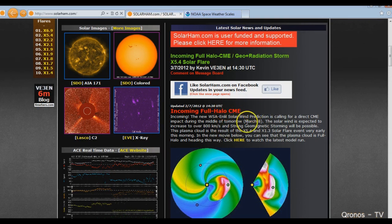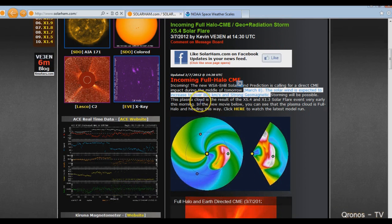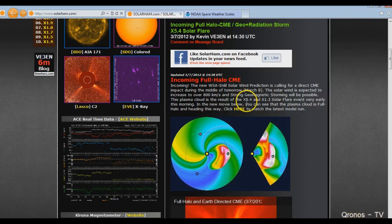We're going to be directly hit, and it's going to hit us tomorrow, March 8th. The solar wind is expected to increase to over 800 kilometers a second, and strong geomagnetic storming will be possible. This plasma cloud is a result of the large X5.4 and X1.3 flare event very early this morning.